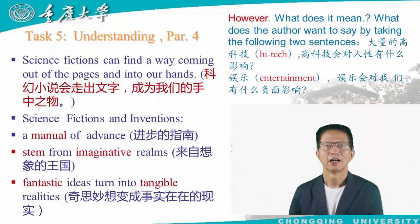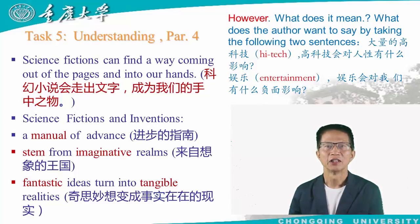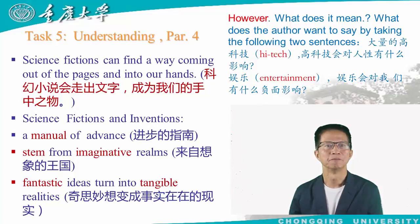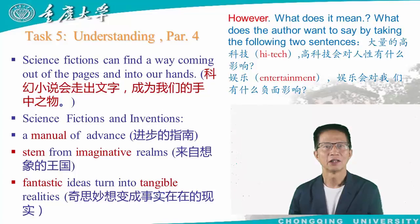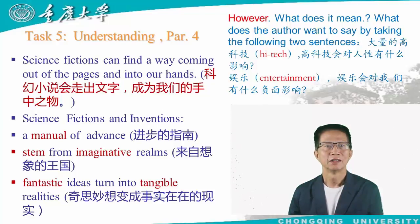Task 5: Understanding Paragraph 4. This is the last paragraph of the passage. It emphasizes, in the last sentence, that science fiction can find a way coming out of the pages and into our hands — 科幻小说会走出文字，成为我们手中之物. In this paragraph, we can find many things about the relationships between science fiction and inventions. Science fiction serves as a manual of technological and cultural advance — 科学和文化进步的指南. Many advanced technologies stem from imaginative realms — 先进的技术，来自想象的王国.